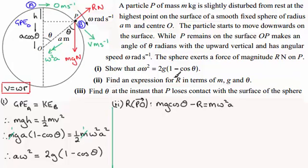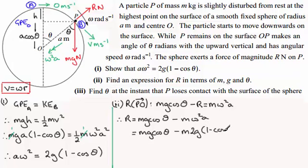And if we're to get R in terms of mg and theta, then if I make R the subject of the formula here, just rearrange it, we've got R equals mg cos theta. And then minus m omega squared a. Now I can pick up on the fact that we've got omega squared a from the result we had in part one. So I can substitute it into there. So we've got R equals mg cosine of theta minus m times 2g times one minus cos theta. So 2g, one minus cosine of theta.